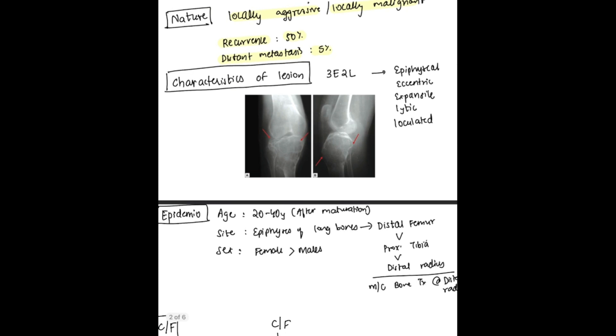Characteristics of the lesions: there is a mnemonic 3E2L. First E is epiphyseal, second E is eccentric, third E is expansile. You can see in this image it is located in the epiphyseal region, it is eccentric, and it is expansile. It is lytic and it is loculated. Can you see these locules? Yes. So 3E2L.